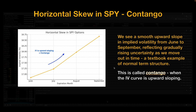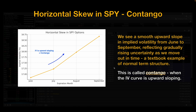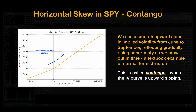Putting those implied volatilities into graphical format, we see a smooth upward slope in implied volatility from June to September, reflecting gradually rising uncertainty as we move out in time. This is a textbook example of normal term structure, which is called contango.